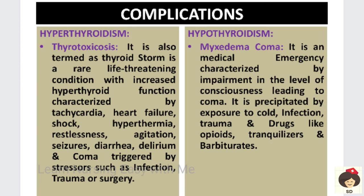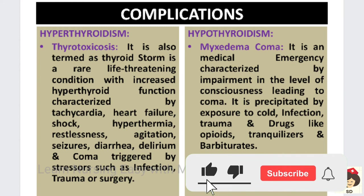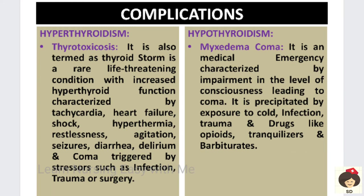The severe complication of hyperthyroidism is thyrotoxicosis, also called thyroid storm. It is a rare, life-threatening condition occurring due to excessive secretion of thyroid hormones. Signs include tachycardia, heart failure, shock, hyperthermia due to increased basal metabolism, restlessness, agitation, seizures, diarrhea, delirium, and coma. This can be triggered by stresses such as infection, trauma, or surgery.